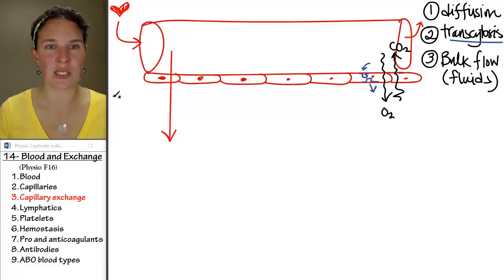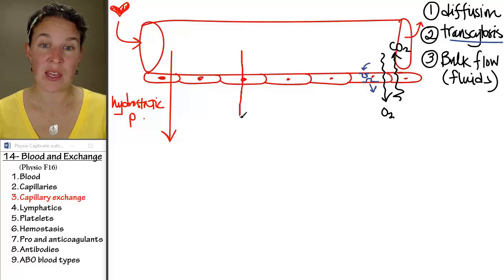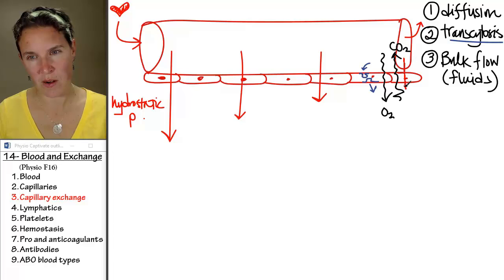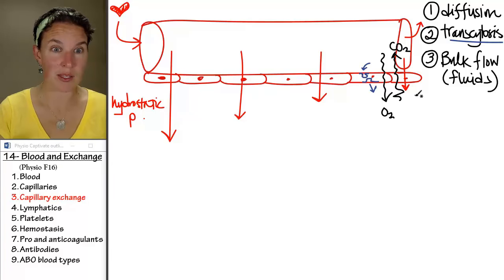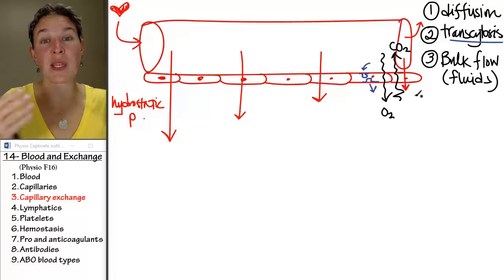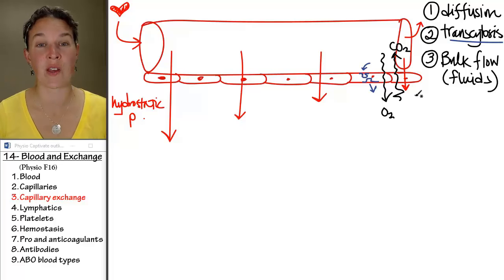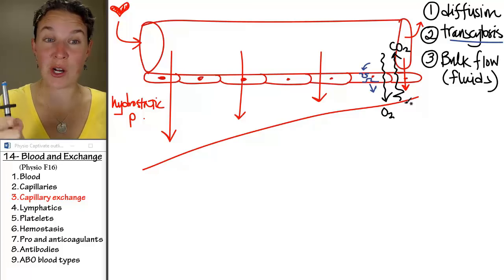Now, the interesting thing is that hydrostatic pressure changes over the length of the capillary. It gets smaller. Why? Why does hydrostatic pressure decrease over the length of the capillary? It's because of friction. Remember the sliding down the shag carpet slide? Friction, you have a higher pressure in the arteries than you do in the veins because that pressure is lost due to friction as you move through the vessels. Does that work? I mean, that's logical, right? So you can imagine that you're going to end up with this changing hydrostatic pressure. Nonetheless, that hydrostatic pressure is pushing fluid out.